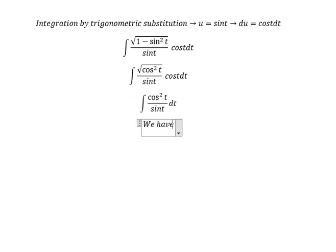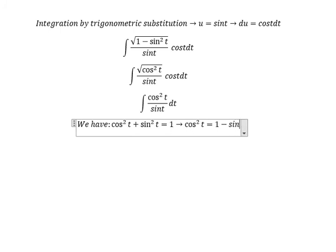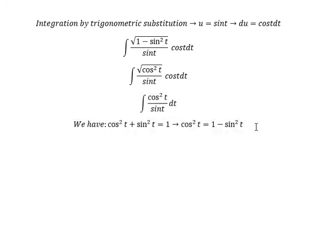We have cos t squared plus sin t squared equal to number 1. So we got cos t squared equal to 1 minus sin t squared. We put this one in here.